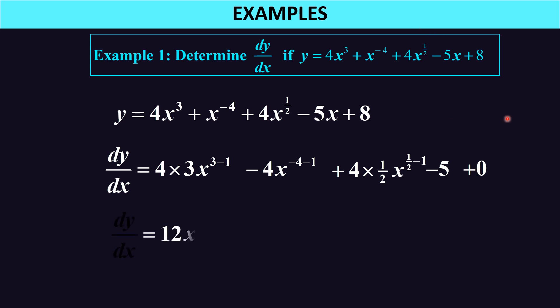Simplifying: 4 times 3 is 12, so 12x². Negative 4 subtract 1 is negative 5, so negative 4x to the negative 5. 4 times a half is 2, and half subtract 1 is negative half, so 2x to the negative half. Then negative 5. So there I have my dy/dx.